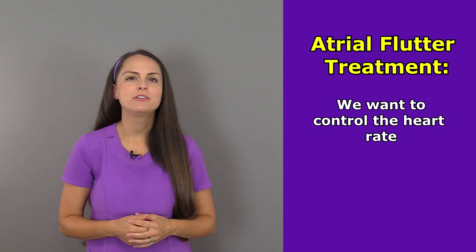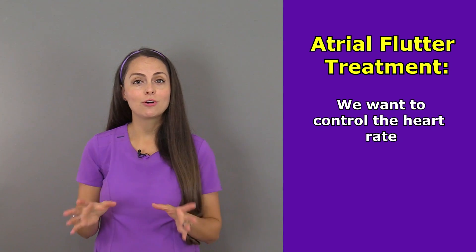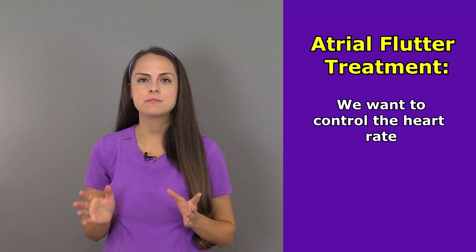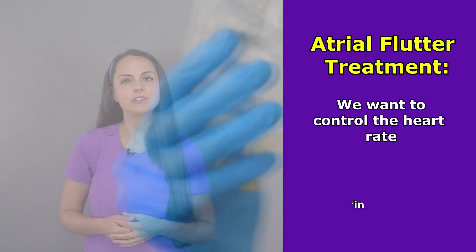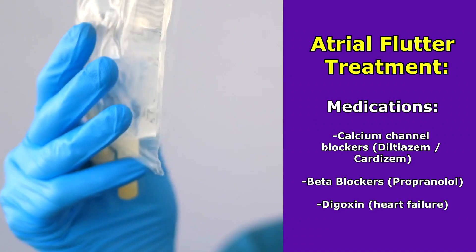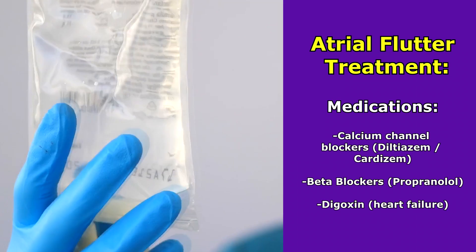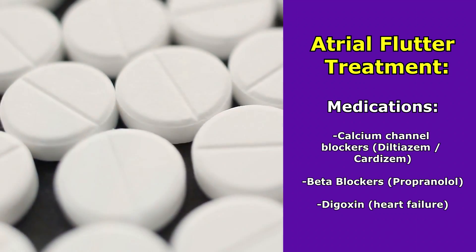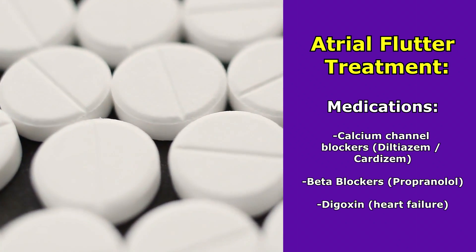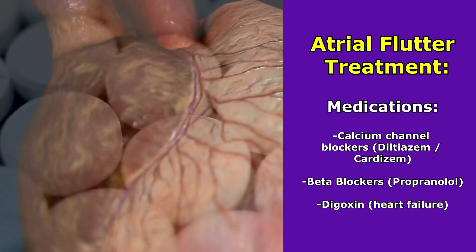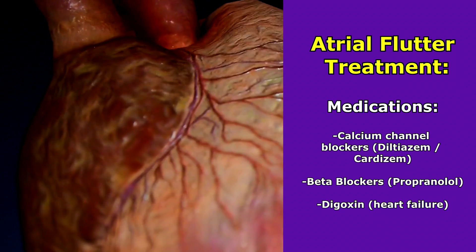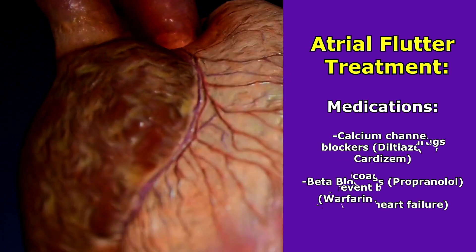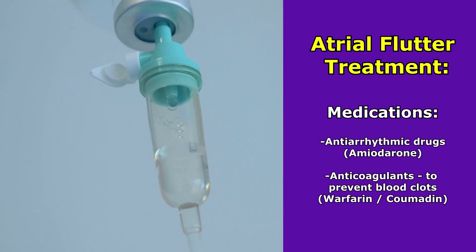How do we treat atrial flutter? We really want to control that heart rate, and we can do that by administering medications. Some medications include calcium channel blockers, such as diltiazem, also known as Cardizem, or administering beta blockers like propranolol, or digoxin — especially if the patient has heart failure, because it'll help the heart pump more efficiently. We can also give antiarrhythmic drugs like amiodarone.